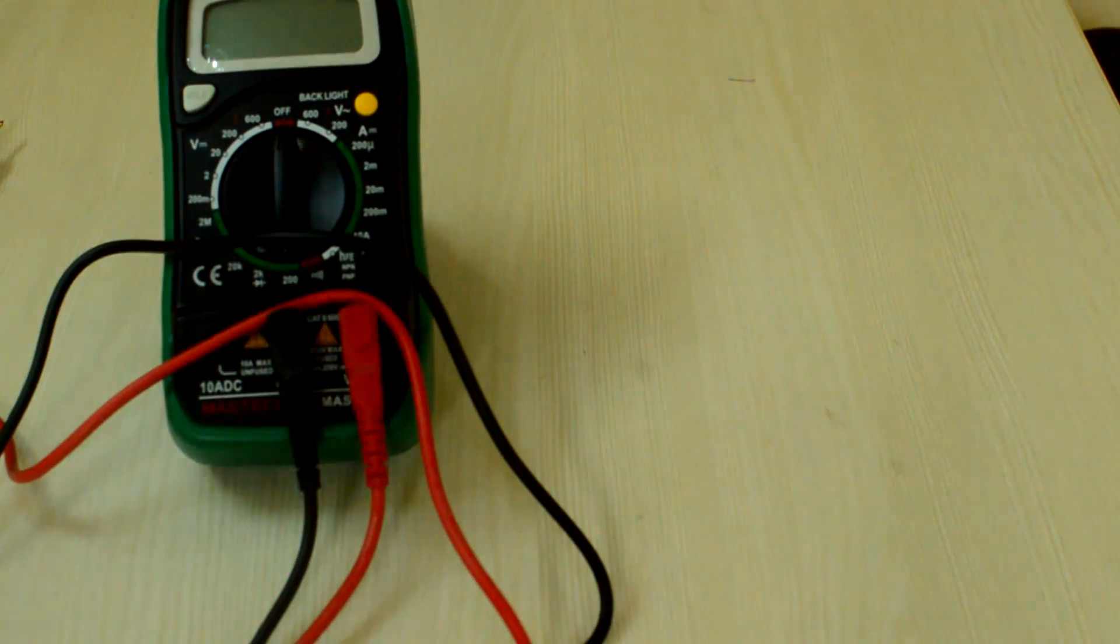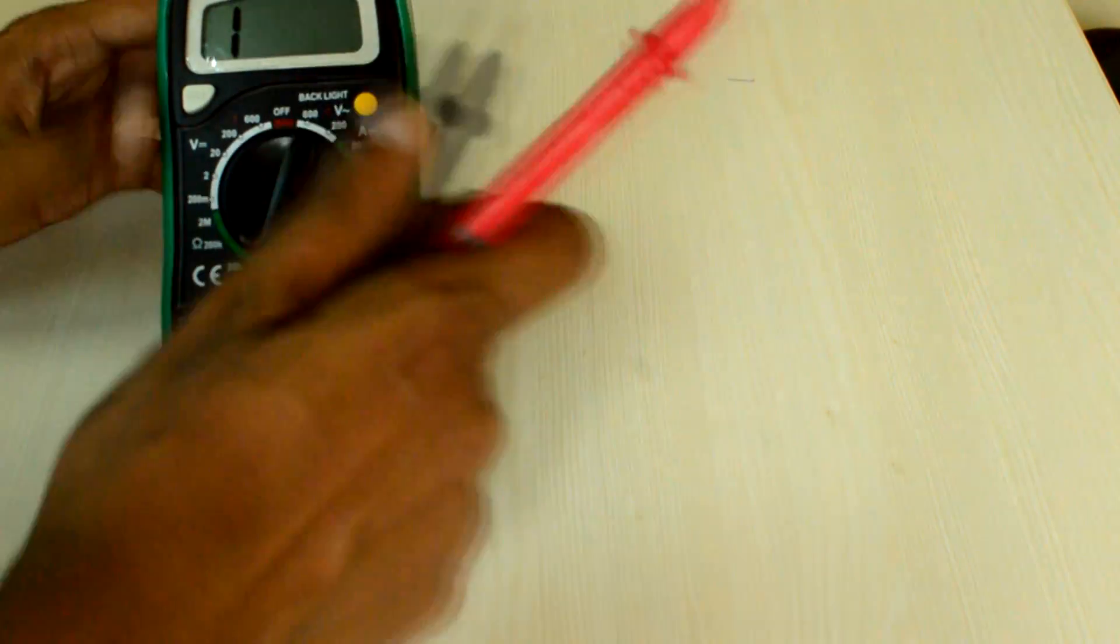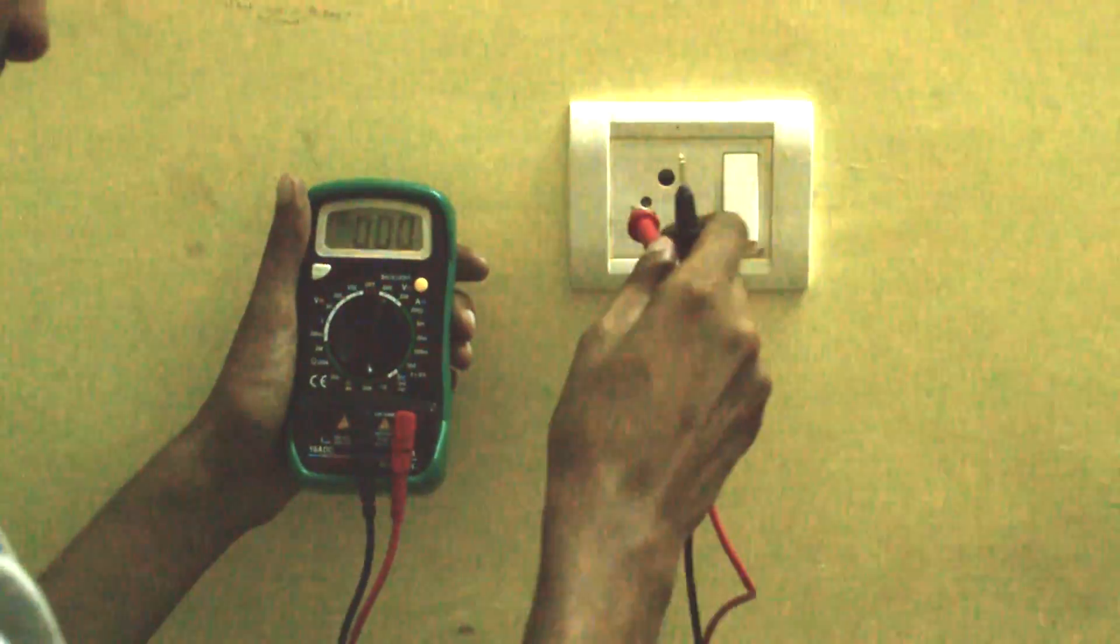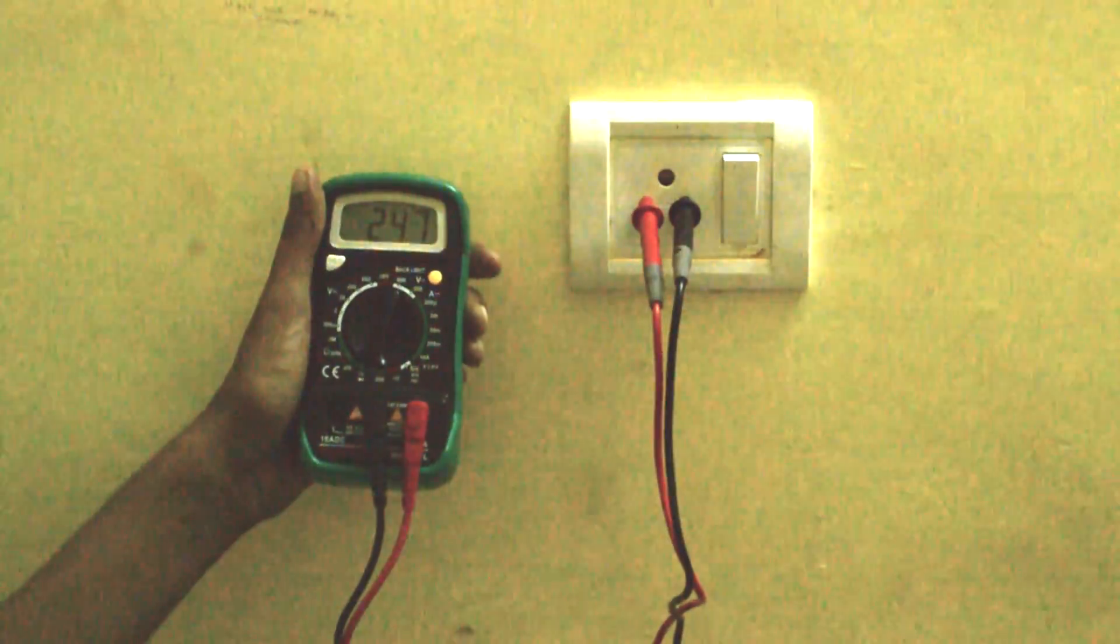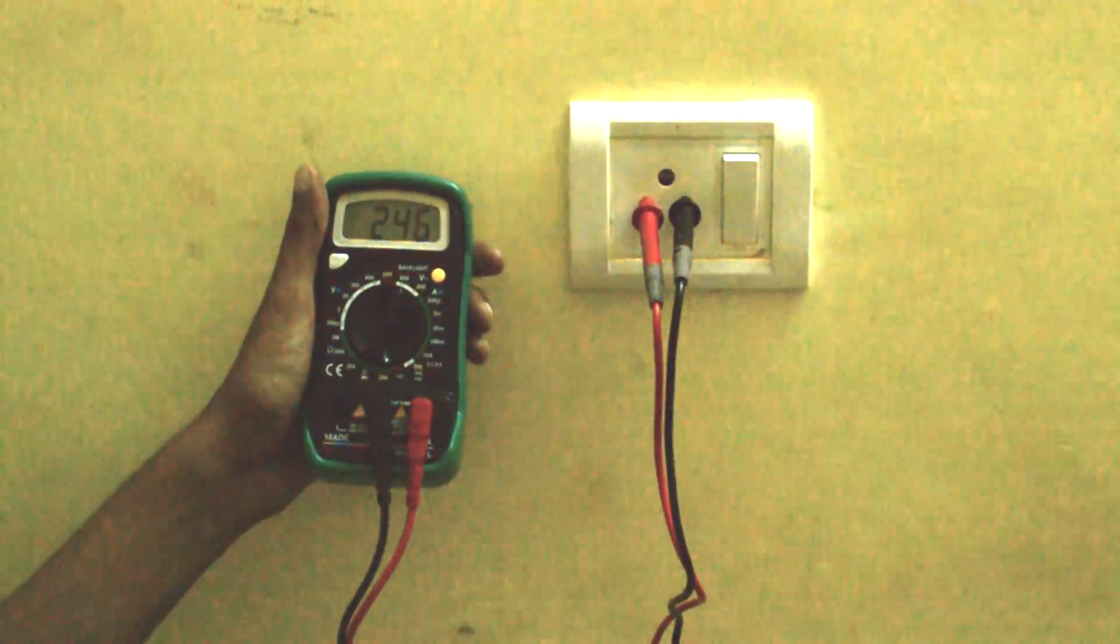Finally, let us check the AC mode of the DMM. Switch the dial to 600V AC. Now let us connect the DMM into the AC supply at home. You can see the AC voltage on the DMM now.